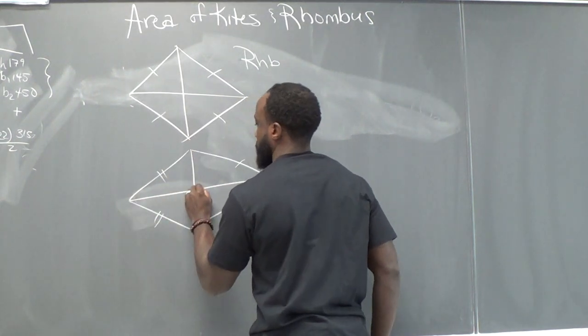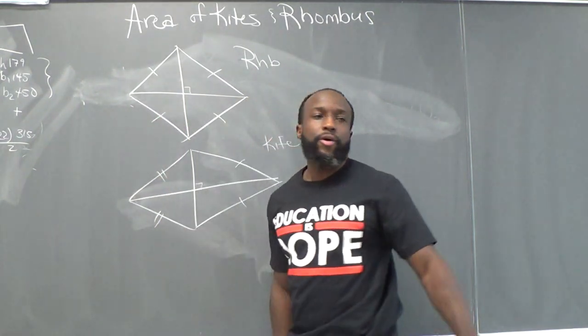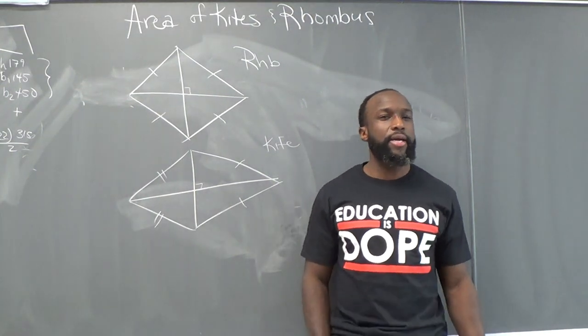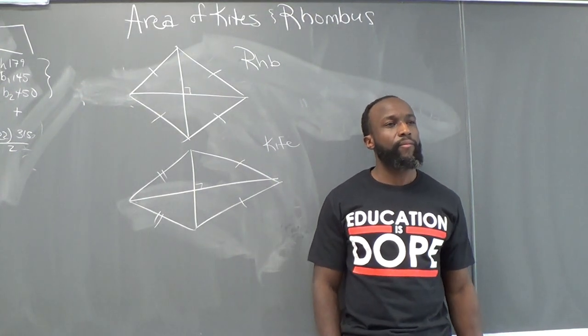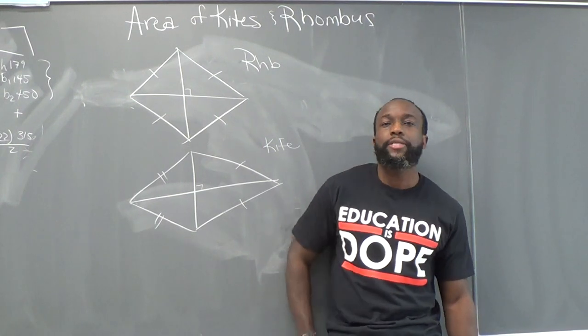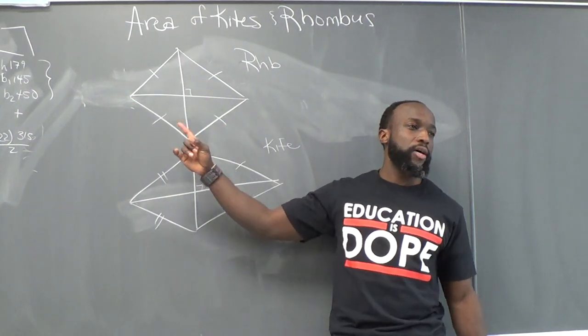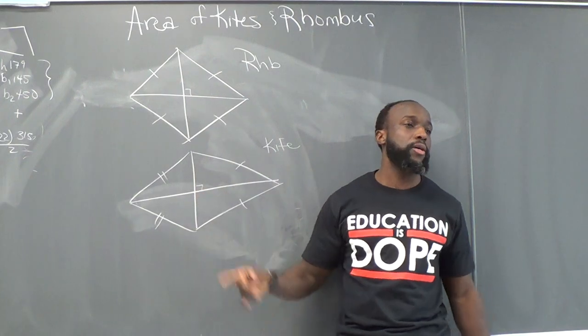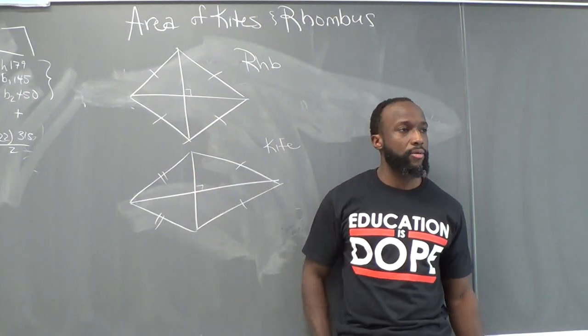What if I do this? What can you tell me about this right here? They make triangles, right? They make four right angles. That's what happens to the diagonals of kites and the diagonals of rhombuses, okay?